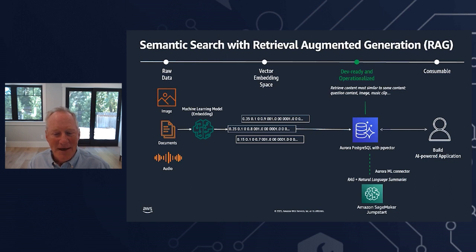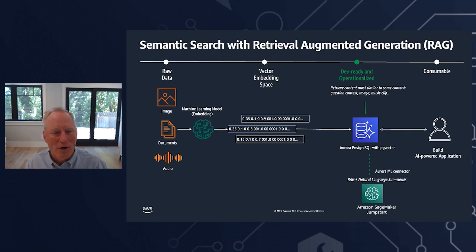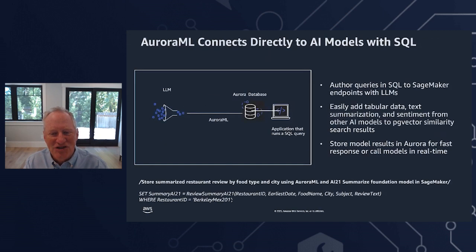Foundation models are very large and trained offline, making them agnostic to any data created after the model was trained. Additionally, foundation models are trained on very general domain corpora, making them less effective for domain-specific tasks. However, you can use retrieval augmented generation to retrieve data from outside a foundation model and augment your prompts with relevant retrieved data. When you perform a semantic search of the embeddings, the original user question is appended with relevant context from similar documents within the knowledge library, and this augmented prompt is then sent to the foundation model in SageMaker Jumpstart, where text answers are generated.